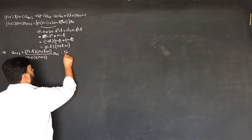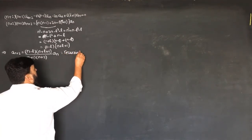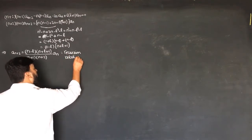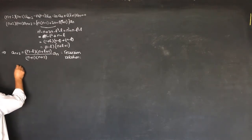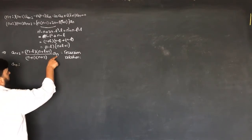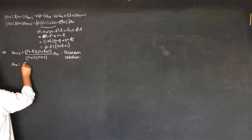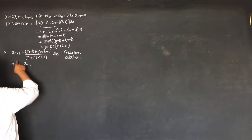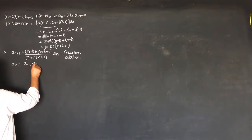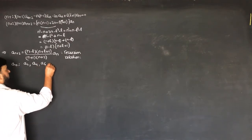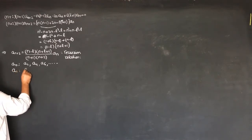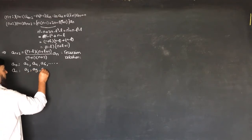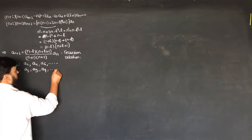We call this the recursion relation because it can find us all the values. If n starts from 0, then we will have a_0, then a_2, then a_4, a_6, and so on in steps of 2. If the start value is 1, then we will have a_1, a_3, a_5, a_7, and so on.